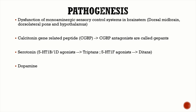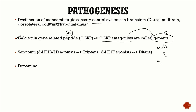The pathogenesis of migraine is mainly due to dysfunction of the monoaminergic sensory control systems in the brainstem. Important neurotransmitters include calcitonin gene-related peptide (CGRP). CGRP antagonists are known as gepants, and an important monoclonal antibody against CGRP is erenumab — both are very important MCQ points.